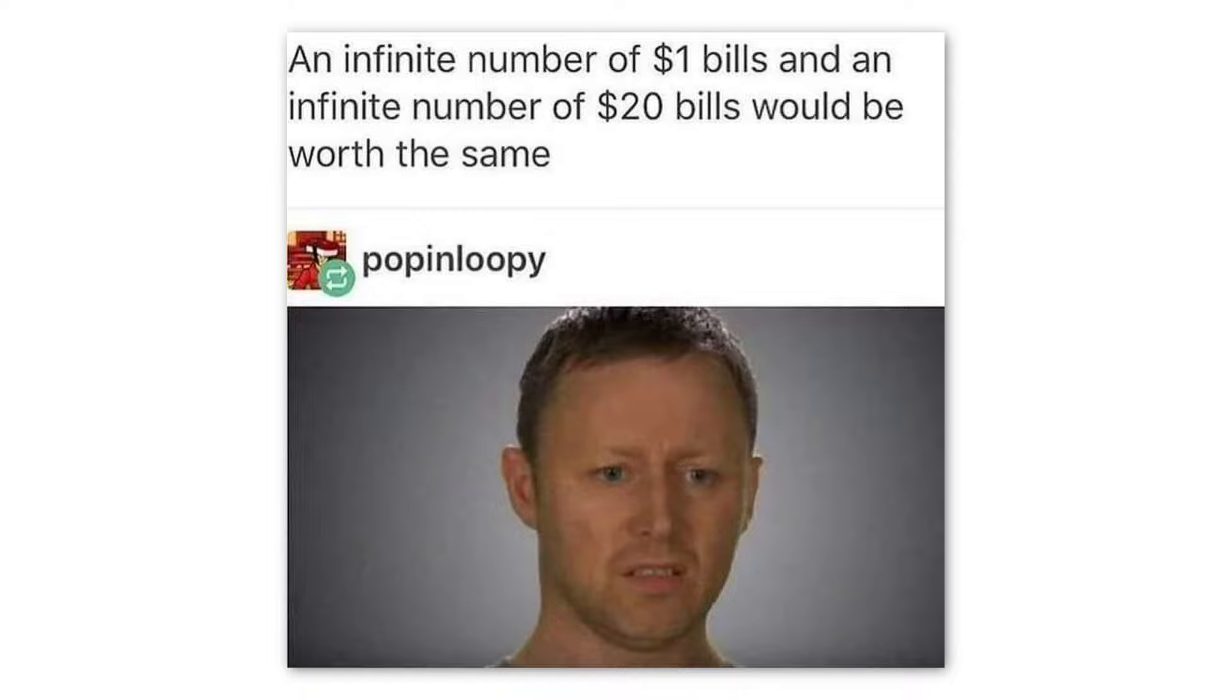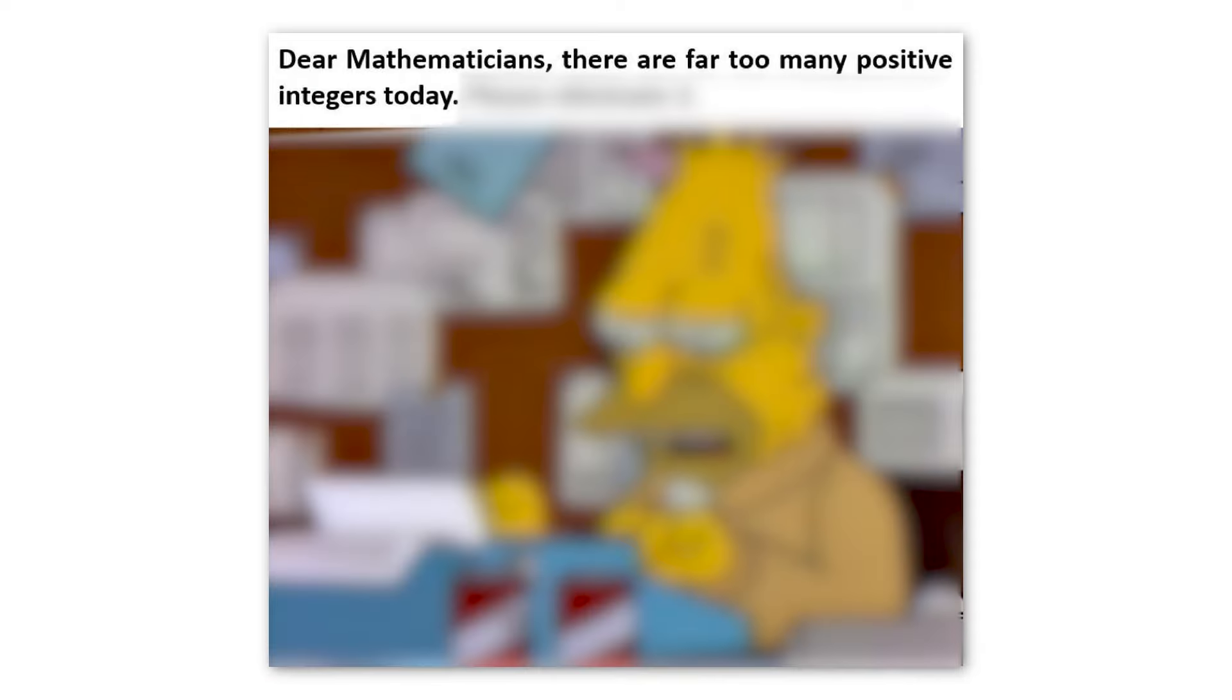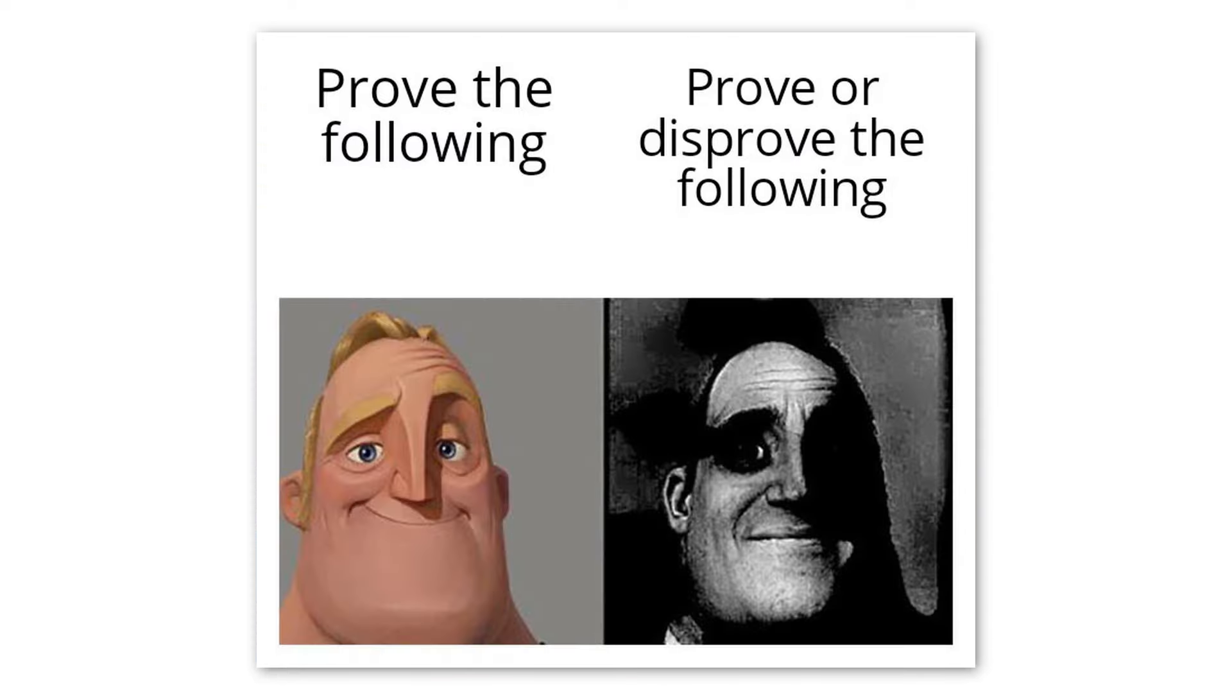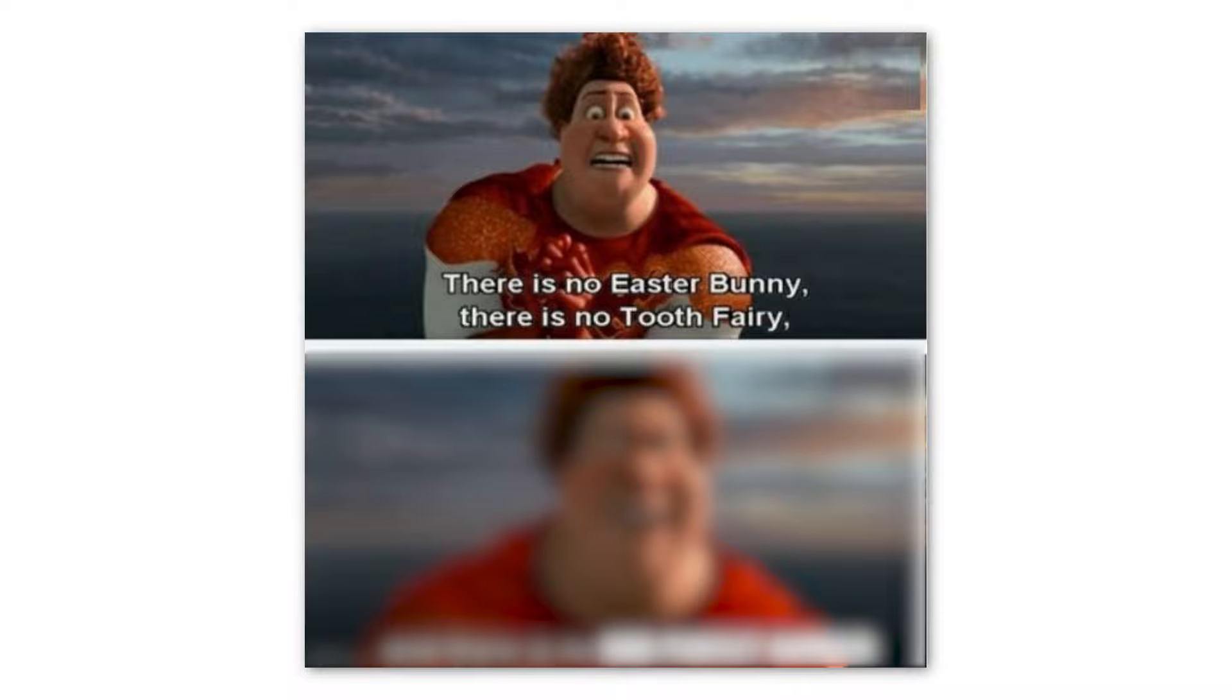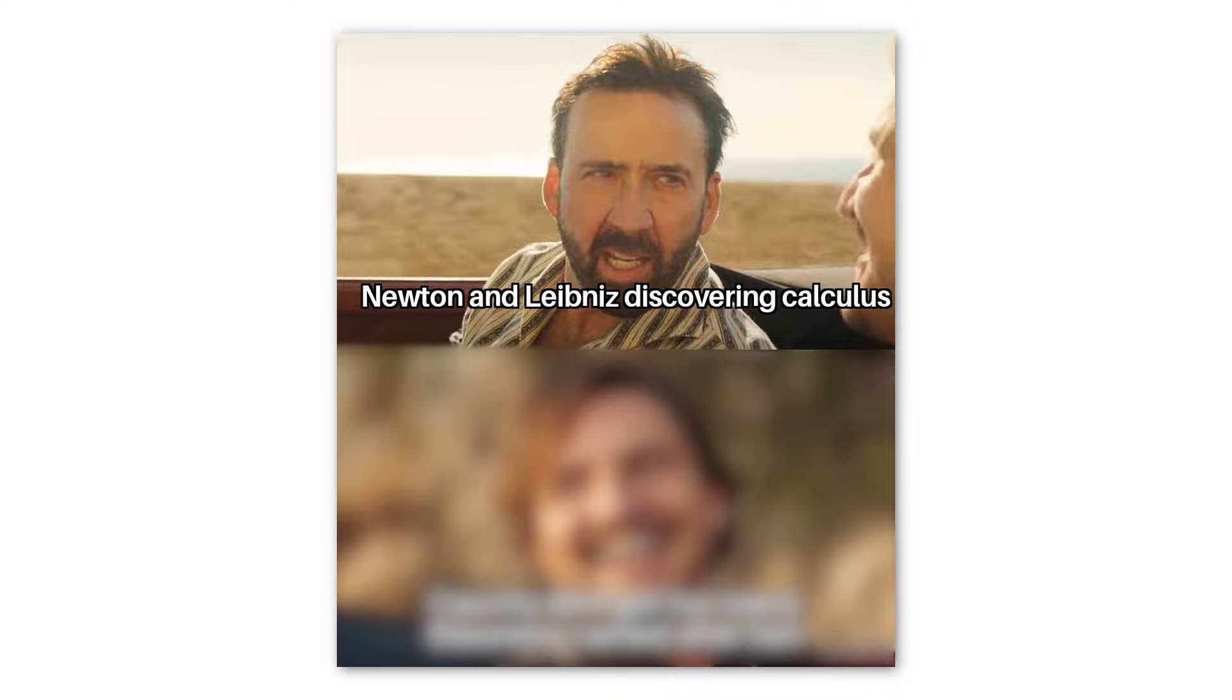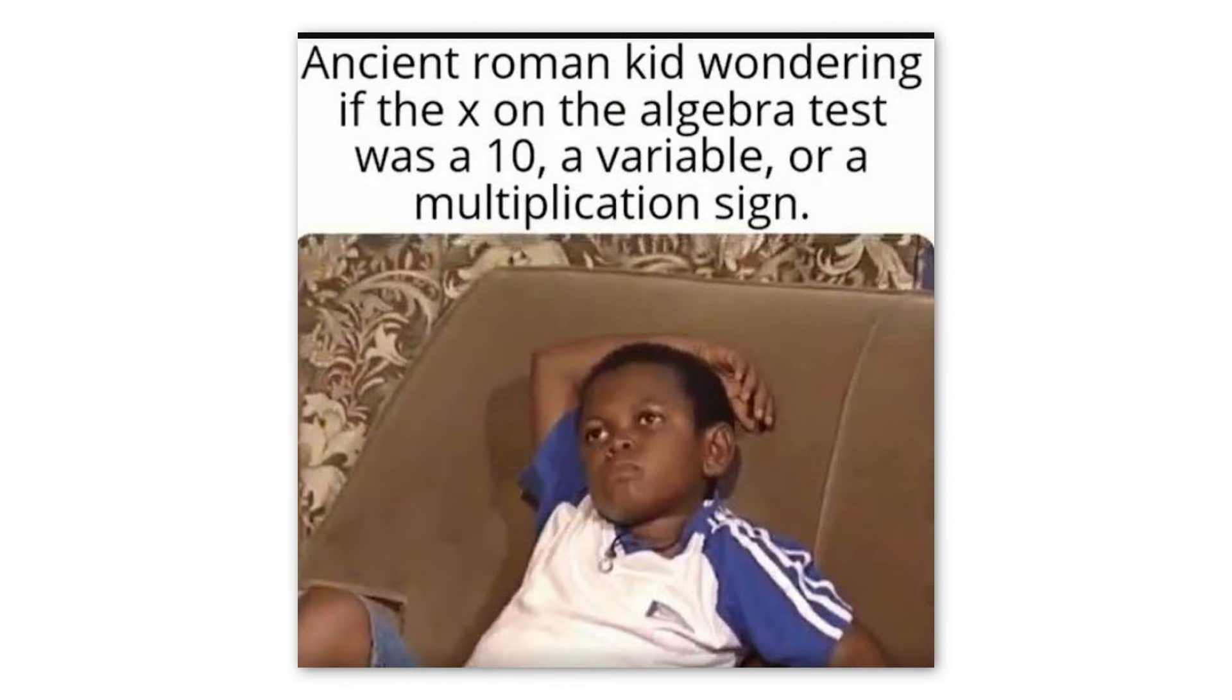An infinite number of $1 bills and an infinite number of $20 bills would be worth the same. Mathematicians watching engineers do pages of hard math in seconds using photomath and graphing calculators. Dear mathematicians, there are far too many positive integers today. Please eliminate three. Prove the following. Prove or disprove the following. X to the power of 4. X4. X squared squared. X tesseracted. There is no Easter bunny, there is no tooth fairy, and there is no ODD perfect number. Newton and Leibniz discovering calculus. Cauchy, who got too many theorems named after him. Ancient Roman kid wondering if the X on the algebra test was a 10, a variable, or a multiplication sign.